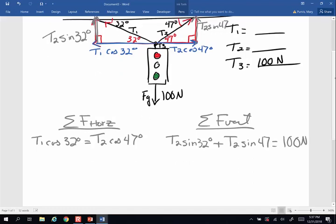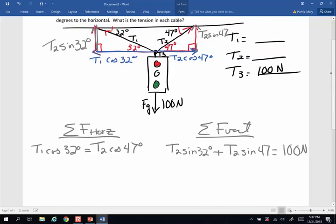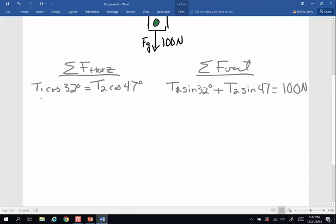Now I have two equations, two unknowns, T1 and T2. Did I get a number wrong? I did. This should be T1, shouldn't it? Somebody's been screaming at me and I finally heard you. Thank you. T1 times the sine of 32 and T2 sine of 47. Okay, gotcha. All right, now I have two unknowns, two equations.